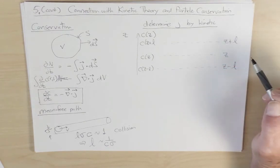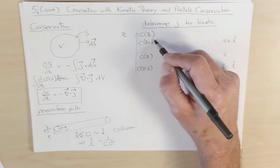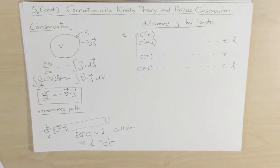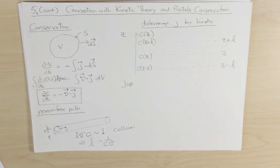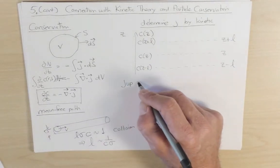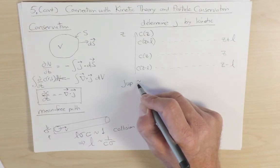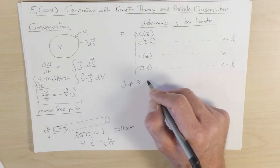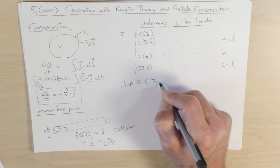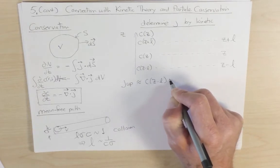So let me now compute the up-going flux. And so I argue that the up-going flux is the concentration at z minus l times the velocity over six. Where do these different terms come from?